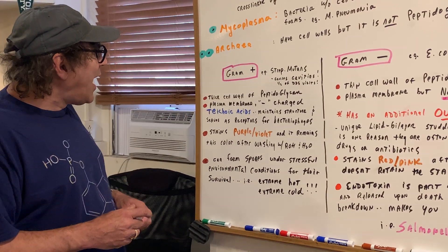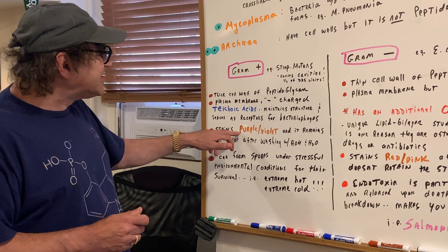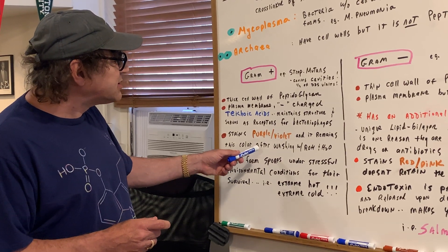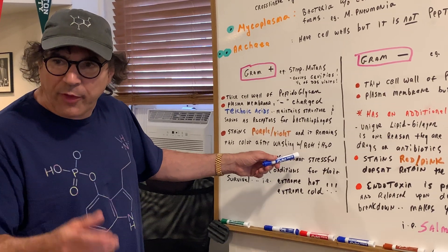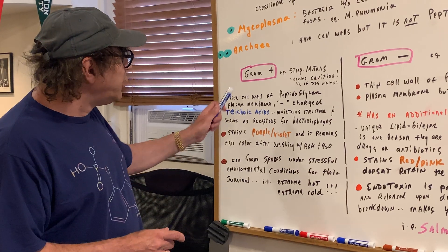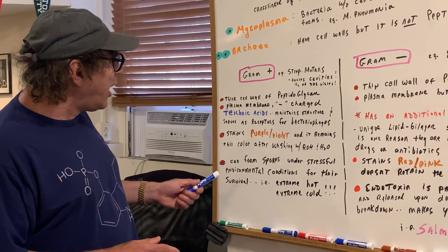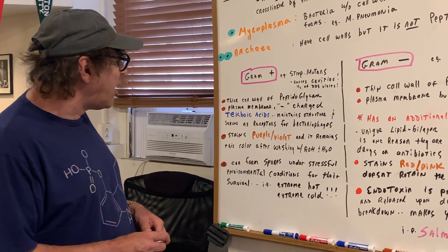A gram-positive bacteria stains purple and violet when treated with the gram stain. And it remains this color after we wash it with alcohol and water. So you're going to remember gram-positive stains purple or violet. And after you do the wash, it stays that same color.